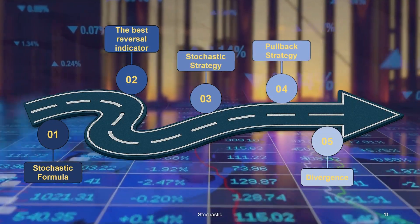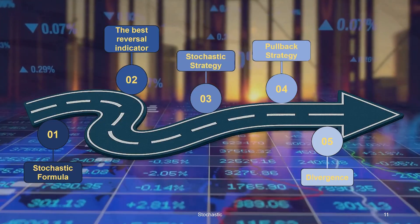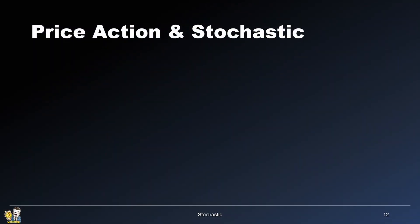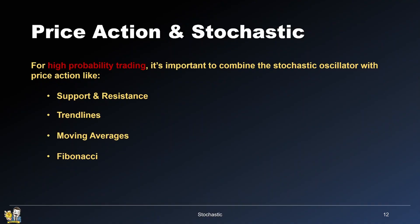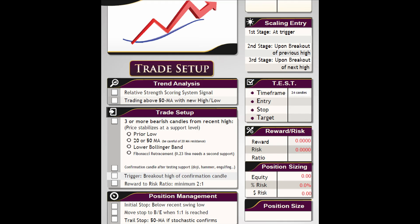Let's now discuss a very powerful strategy called the pullback strategy. It's a strategy that includes price action. For high-probability trading, it's important to combine the stochastic oscillator with price action elements like support and resistance levels, trend lines, moving averages, Fibonacci levels, and so on. The pullback strategy uses the stochastic as a confirmation tool, and price action helps make sure that a reversal is actually coming.